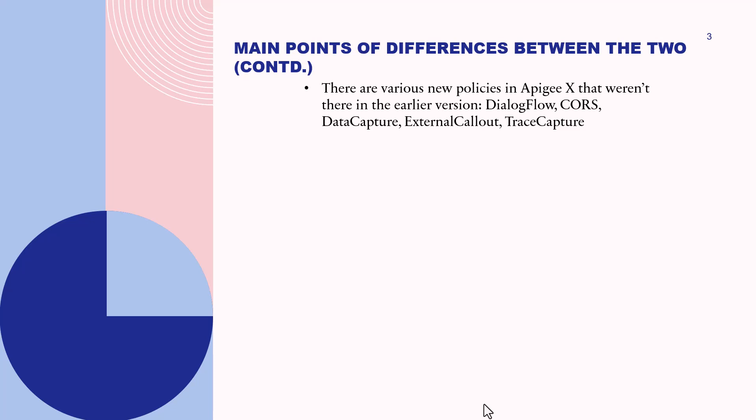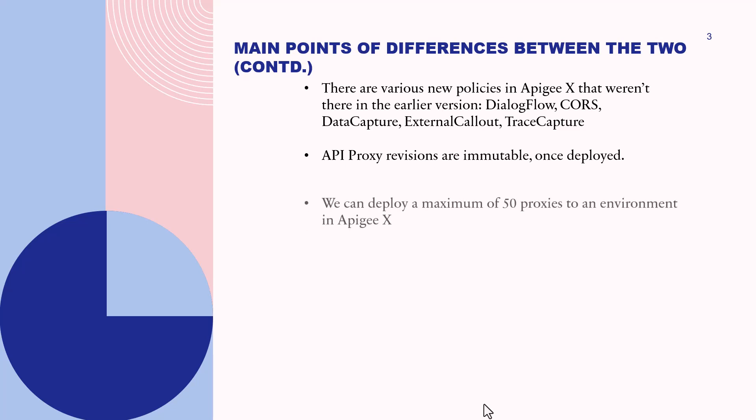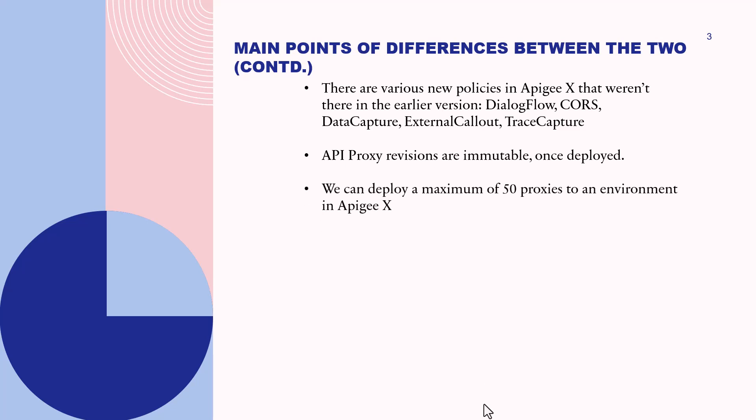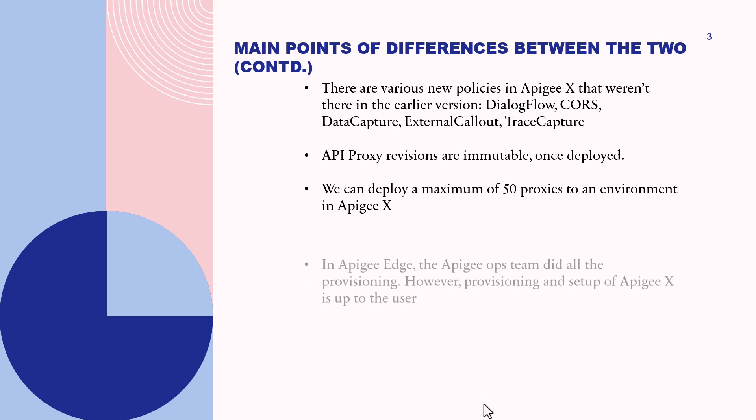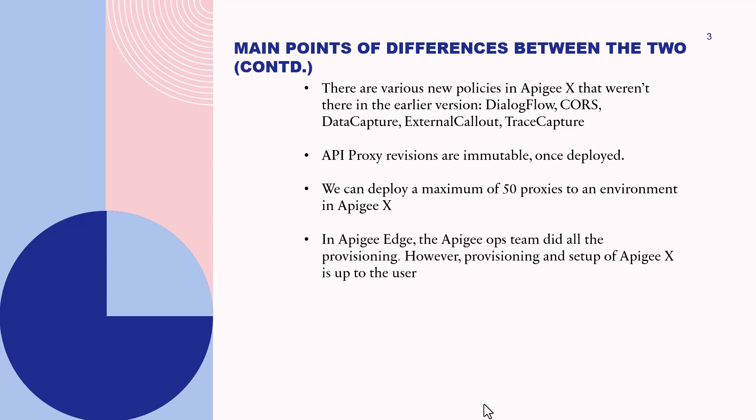There are some new policies added in Apigee X that weren't in the earlier version of Apigee Edge, like Dialogflow, Cores, Data Capture, External Callout, and Praise Capture. API proxy revisions are immutable — once deployed, they cannot be changed. We can deploy a maximum of 50 proxies to an environment in Apigee X. In Apigee Edge, the Apigee Ops team did all the provisioning; however, provisioning and setup of Apigee X is up to the user.